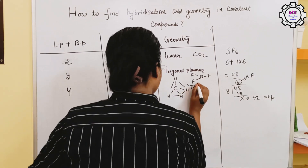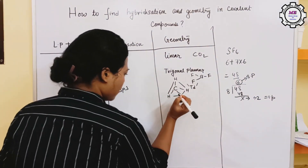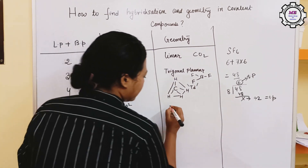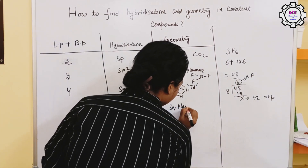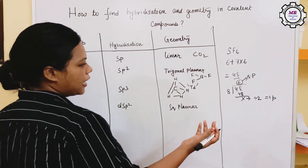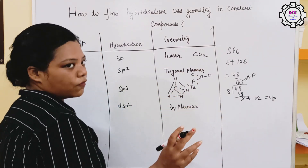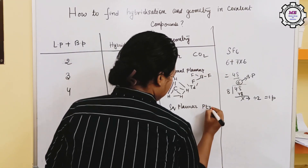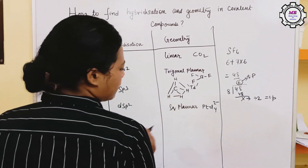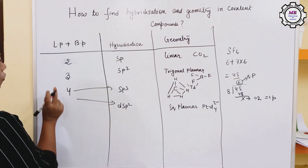For SP3, you have CH4, which has a tetrahedral structure — also called TD structure. There is another formation called DSP2, which gives square planar geometry. DSP2 is required in D and F block and coordination compounds — for example, PtCl4 2-minus is square planar.